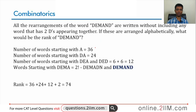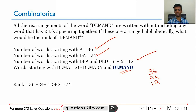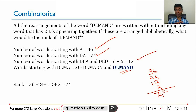Recap: words starting with A: 36; words starting with D-A: 24; words starting with D-E-A and D-E-D: 12; within D-E-M-A, DEMAND is the 2nd word. So the rank is 36 plus 24 plus 12 plus 2, which equals 74. If we rearrange all letters of DEMAND such that the two D's are not together and arrange alphabetically, the rank of DEMAND is 74th on that list.